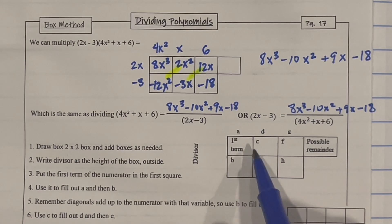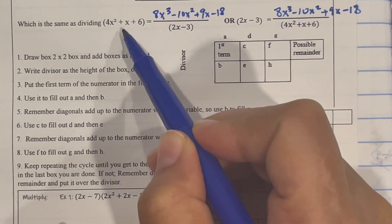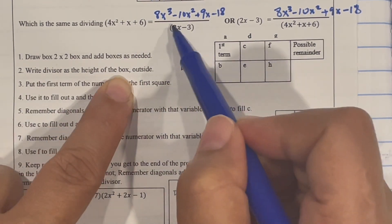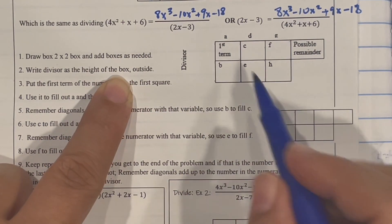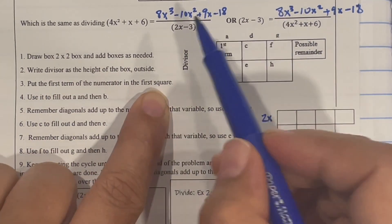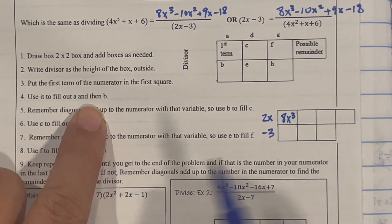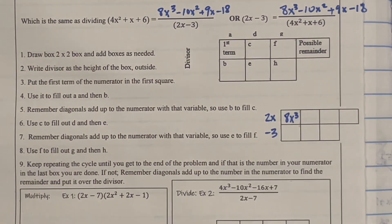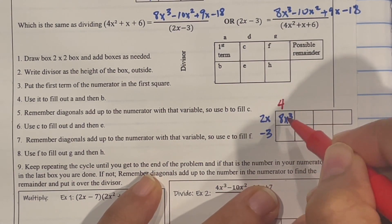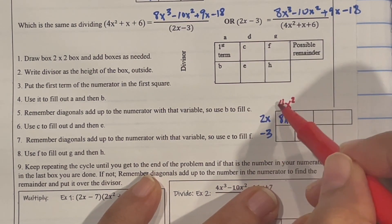Draw a box and extend the boxes as needed. Step 2: write down the divisor as the height of the box. We're dividing, so the divisor is 2x minus 3 as the height. Then take the first term of the numerator and put it in the first square — that's 8x cubed. Now use that to fill in a and b: 2 times something is 8, so that's 4; x times something is x cubed, so that's x squared.